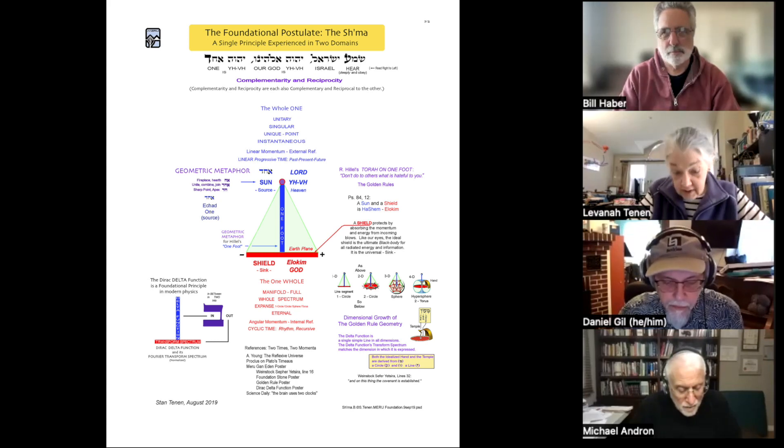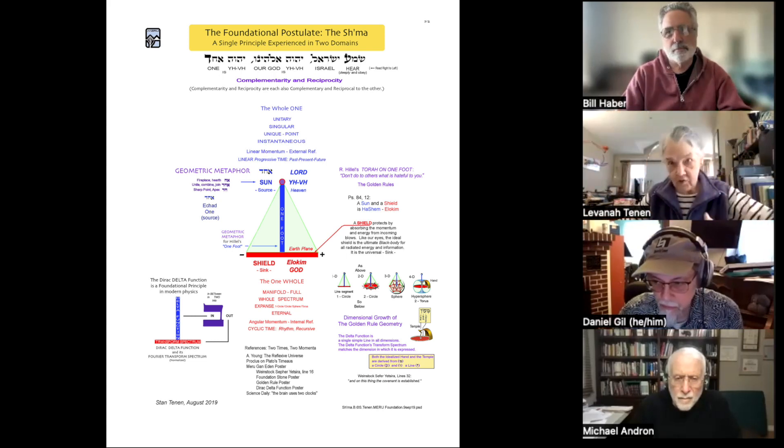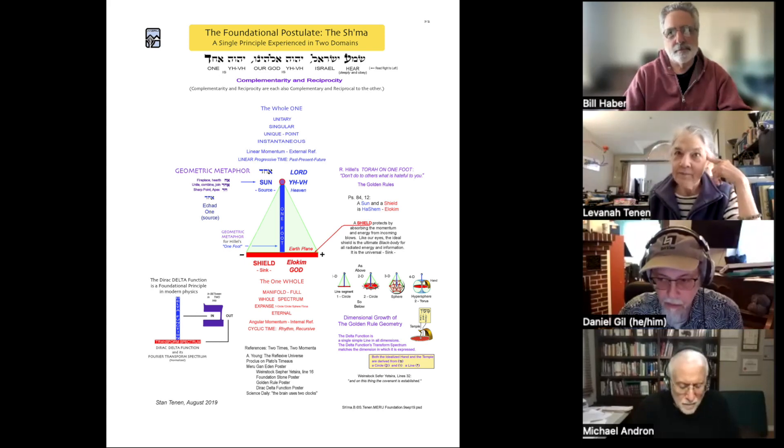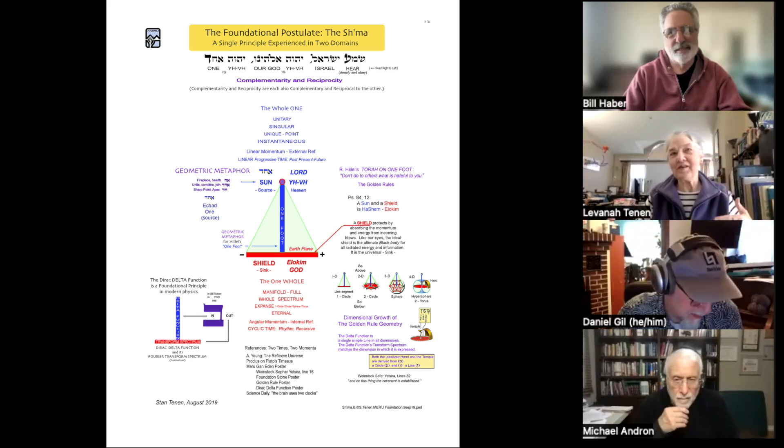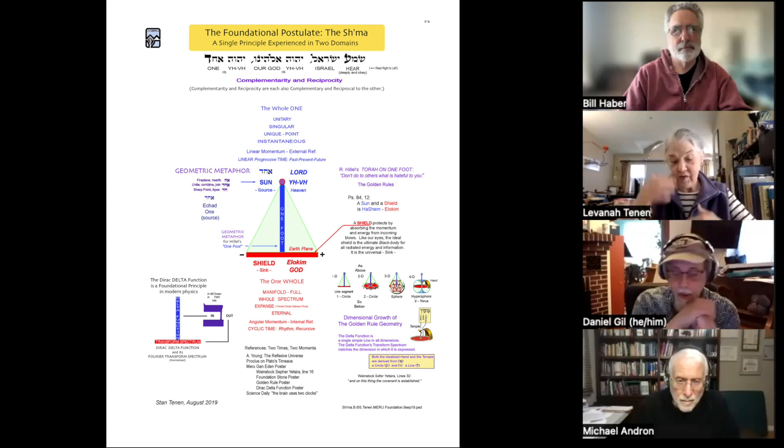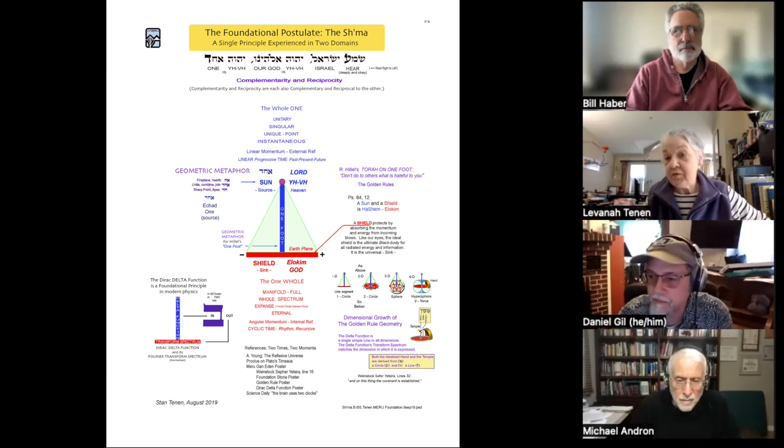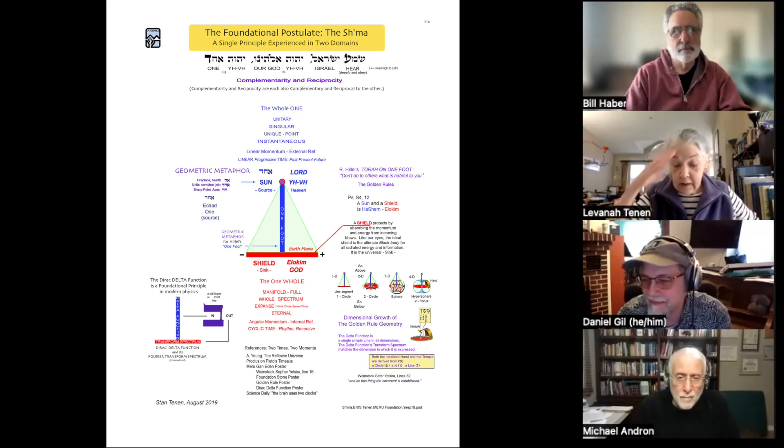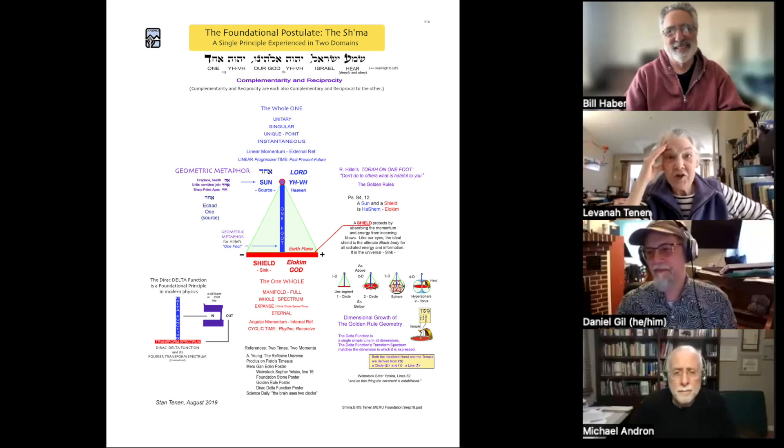So underneath it says okay, echad, one, which is the source. And when he's talking about just a little another terminology thing, underneath the word shield on the bottom in red he has sink. That's a concept in engineering where you've got the source of something and the sink of something which basically absorbs whatever the source is sending out. That's a term of engineering. Analyzing things that are moving and in relationship and in process in terms of the way he thought about things in engineering was perfectly natural.